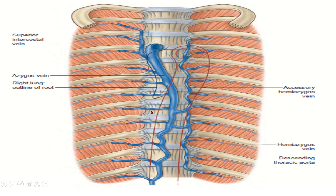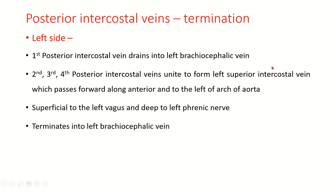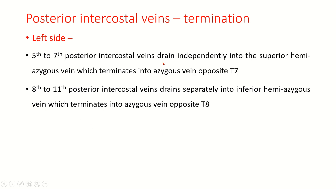On the left side: the first posterior intercostal vein drains into the left brachiocephalic vein. The 2nd, 3rd, and 4th unite to form the left superior intercostal vein, which passes forward along the anterior aspect to the left of the arch of the aorta, superficial to the left vagus and deep to the left phrenic, terminating in the left brachiocephalic vein. The 5th to 7th (sometimes 8th) drain into the accessory hemiazygos (superior hemiazygos) vein, which terminates into the azygos vein opposite T7. The 8th to 11th (or 9th to 11th) drain into the hemiazygos (inferior hemiazygos) vein, which terminates into the azygos vein opposite T8.